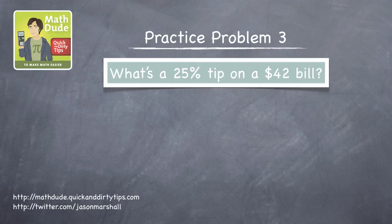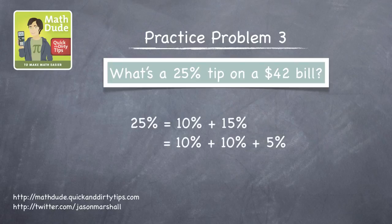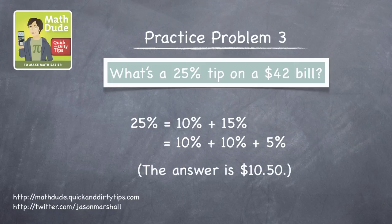The third practice problem asks you to calculate 25% on a $42 bill. We've only calculated 20% and 15% tips before, so how can we find 25%? It's easy, because 25% is just 10% plus 15%, both of which we've done. So you should be all set to give it a shot. The answer is $10.50.